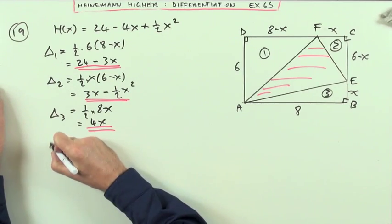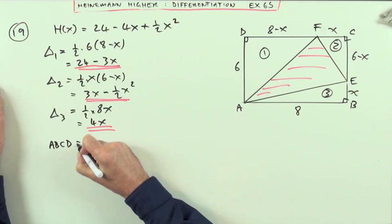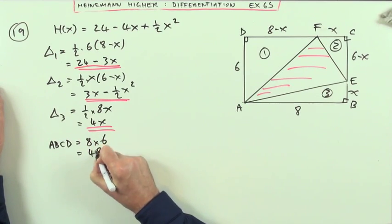Last thing though, the whole rectangle. So the whole rectangle, ABCD, would just be 8 by 6, which is 48.